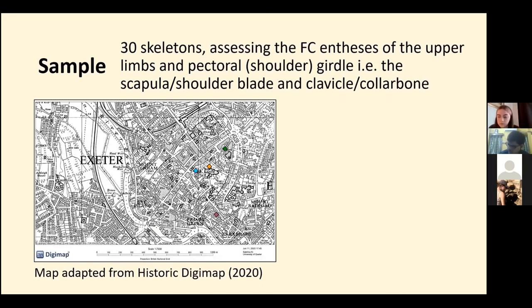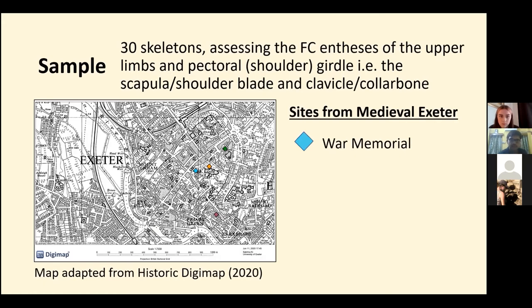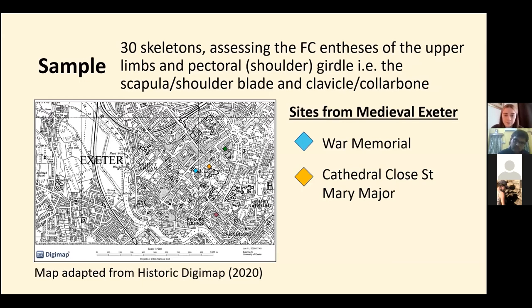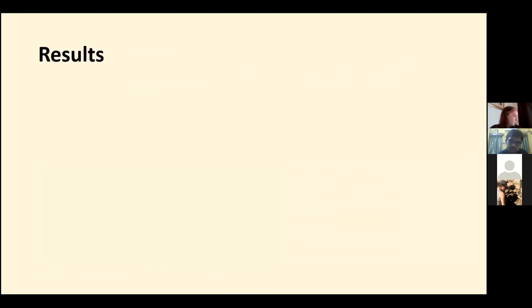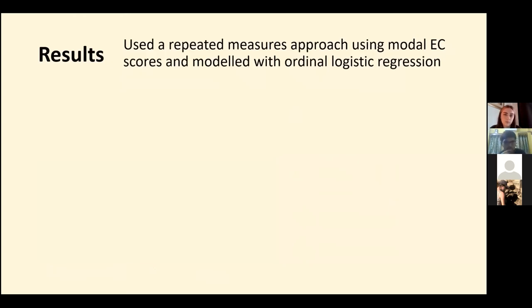This map shows the Exeter archaeological sites that my sample was drawn from: blue indicates the war memorial, orange indicates the cathedral close Saint Mary Major, green indicates Princess Hay, and purple indicates Friars Gate. I used a repeated measures approach to analyze my data — each enthesis's modal EC score, which is the EC score most frequently recorded for that specific enthesis for that person, was treated as an individual data point. So one individual could yield a maximum of 32 data points, and this repeated measures approach also accounts for the fact that multiple EC scores come from the same individual.